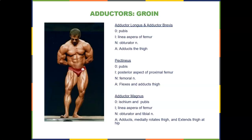The adductors are the groin muscles. The adductor longus and adductor brevis both originate on the pubis, insert on the linea aspera of the femur, are innervated by the obturator nerve, and adduct the thigh. The pectineus is higher up, originates on the pubis, inserts on the posterior aspect of the proximal femur, is innervated by the femoral nerve, and both flexes and adducts the thigh.